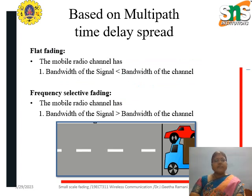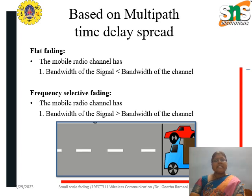In case of flat fading, the mobile radio channel has a signal bandwidth that is less than the bandwidth of the channel. Consider this road as the channel — if the bandwidth of the signal, like a vehicle, is less than the bandwidth of the channel, then it can easily travel through this road.